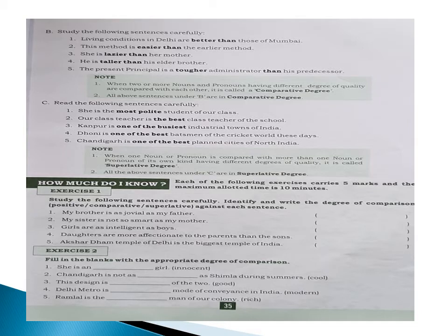See children, on page number 35 there are some sentences. Study these: 'Living conditions in Delhi are better than those of Mumbai.' 'This method is easier than the earlier method.' Here we observe that when two or more nouns and pronouns having different degrees of quality are compared with each other, it is called the comparative degree. All the above sentences under B are in the comparative degree.